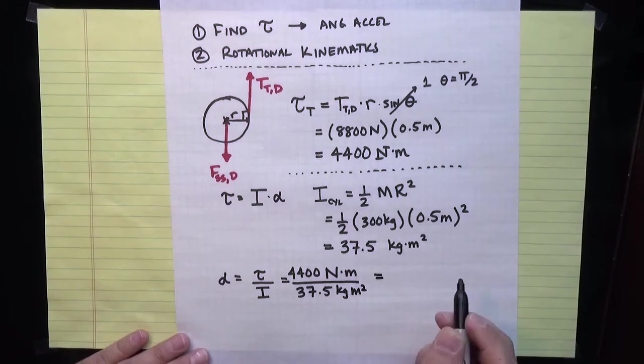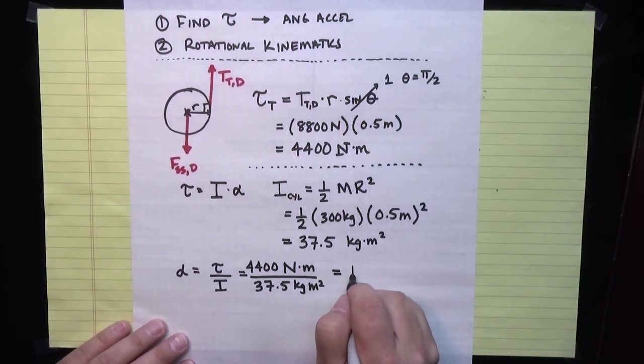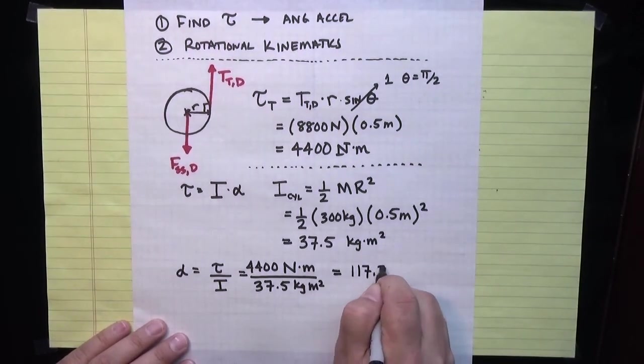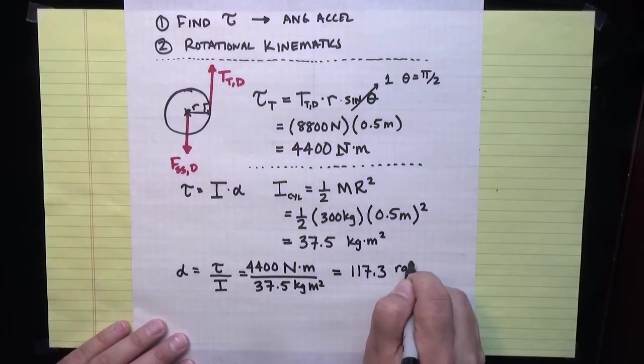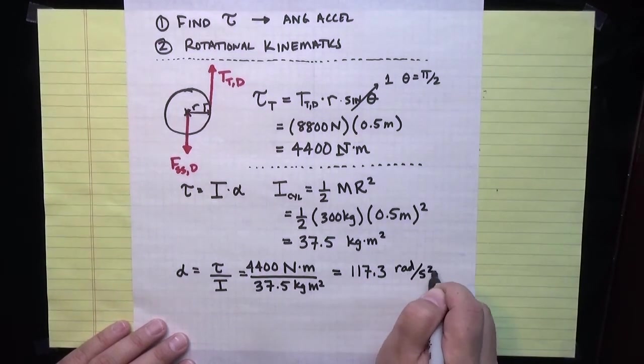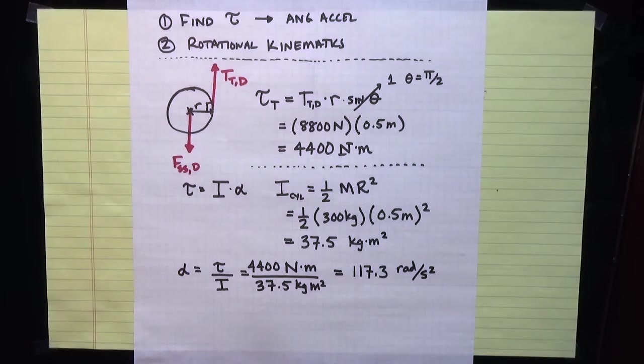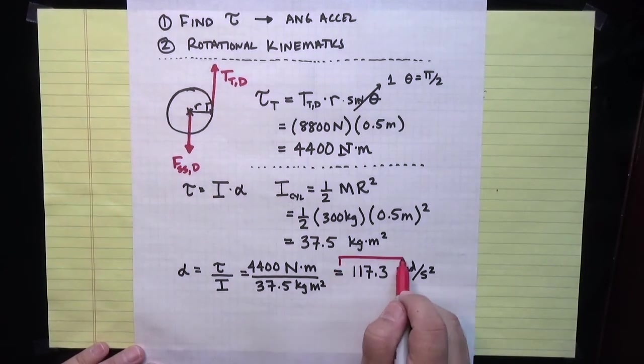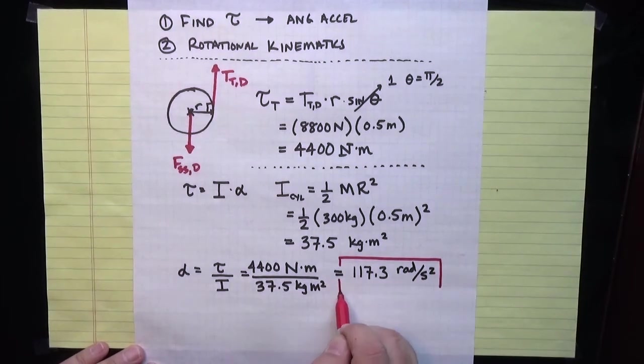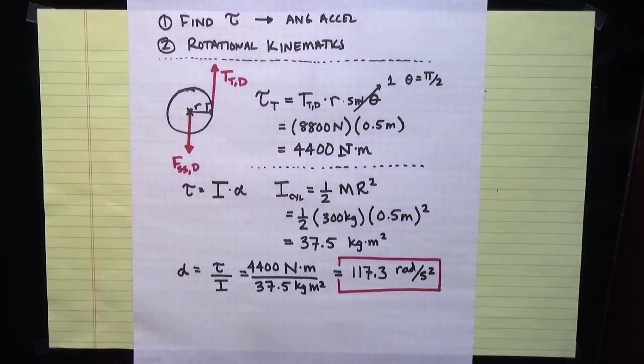If I numerically work that out, I get that this is 117.3 radians per second per second. So that is the angular acceleration that the drum experiences as it's unspooling from the action of the tension of the tethered satellite on the drum.